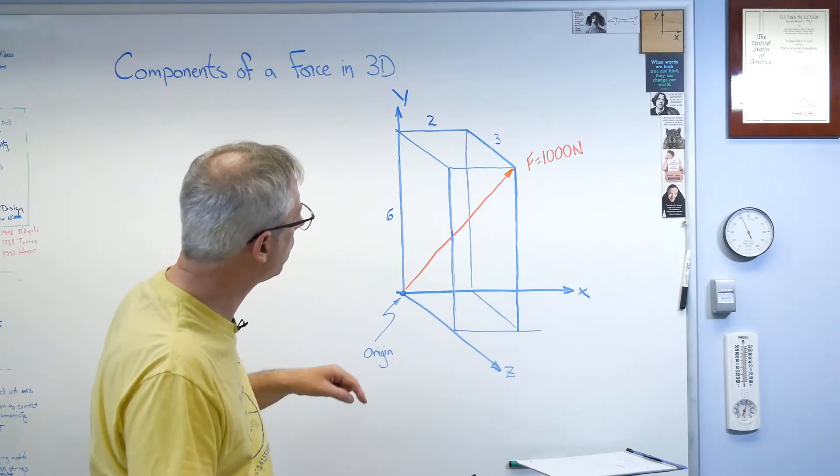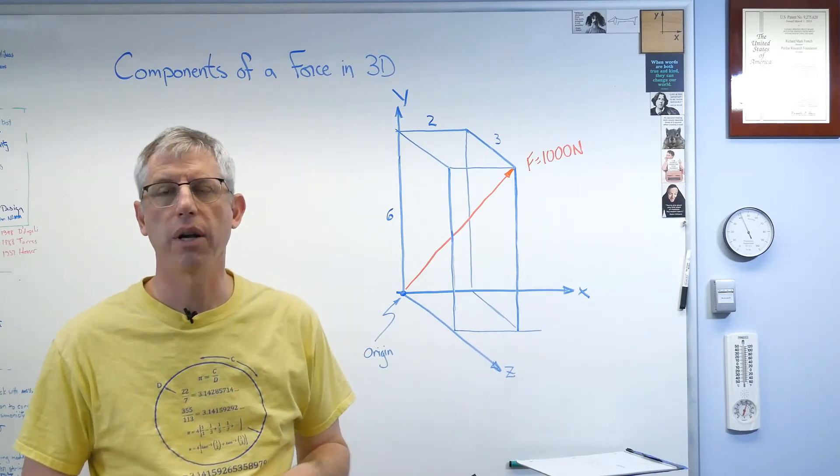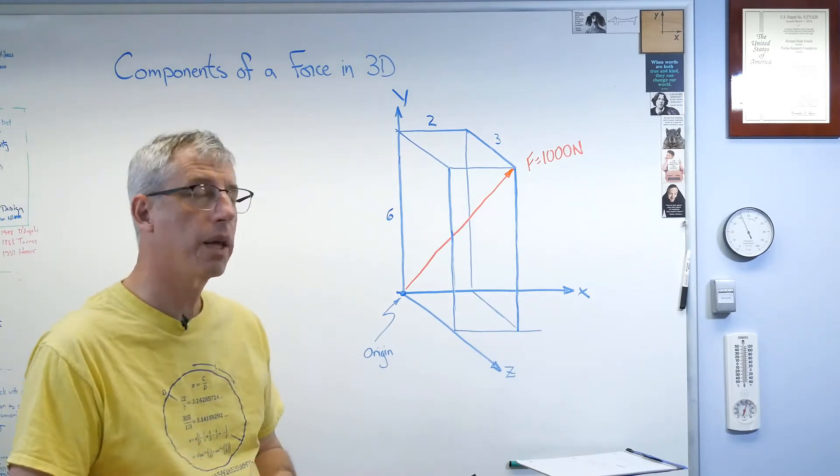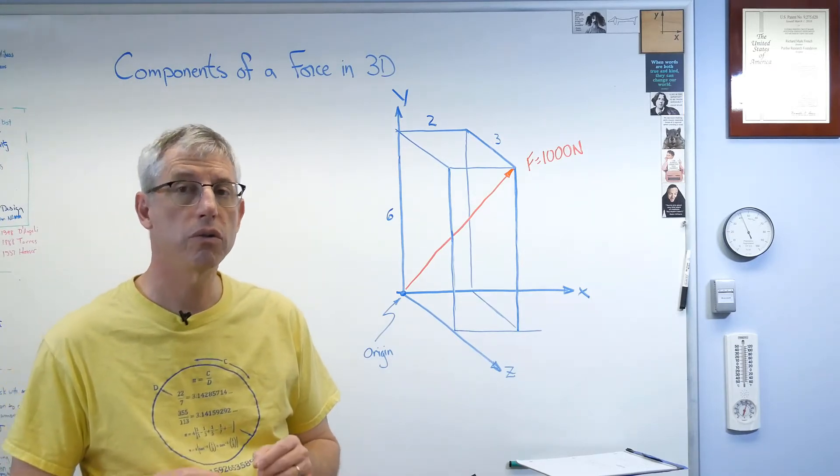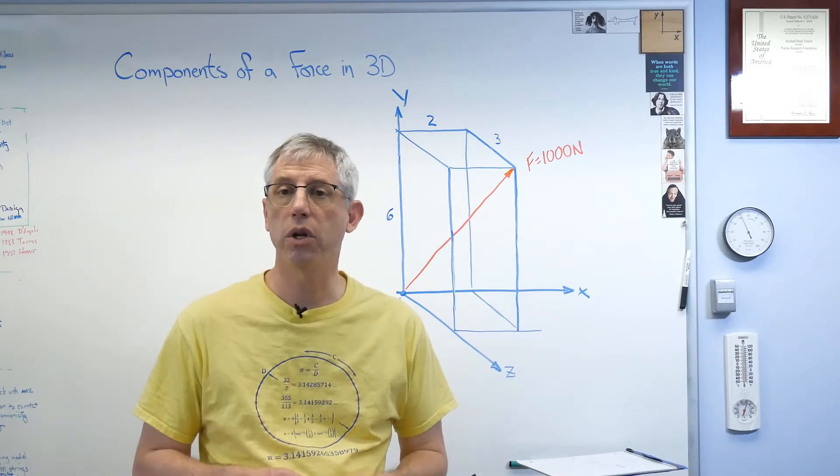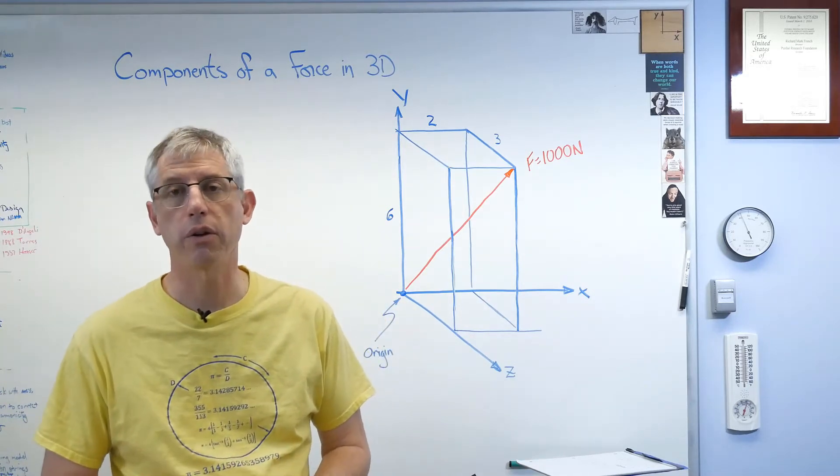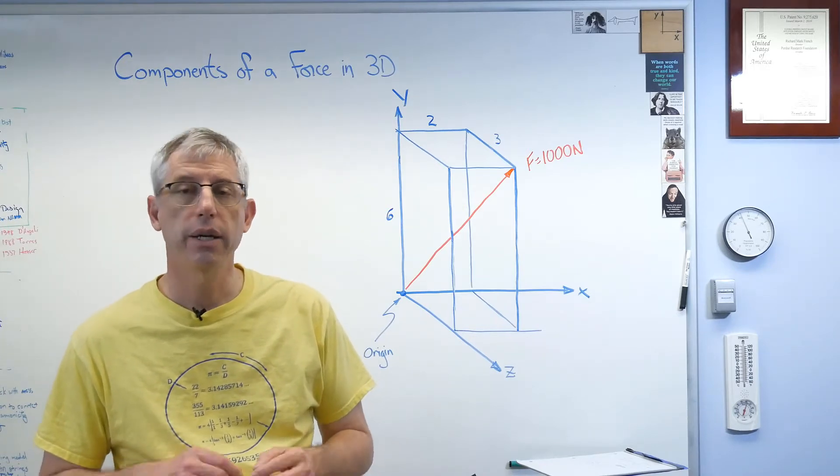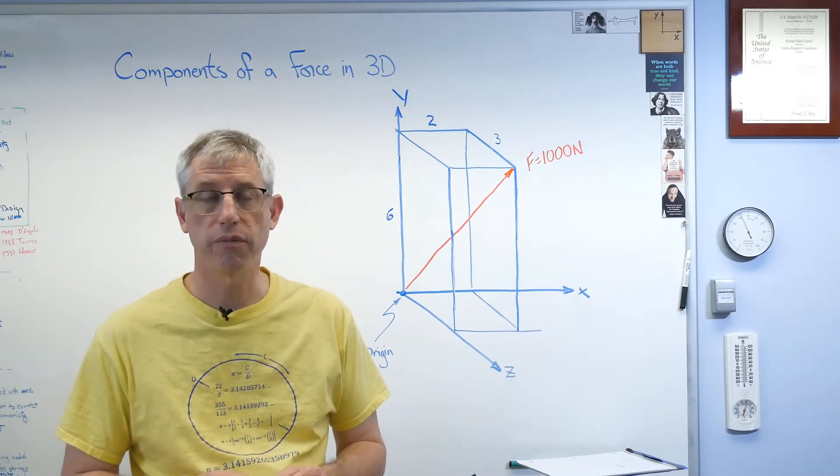If you start trying to calculate angles in here, you're going to find out pretty quick that there are so many angles, you're going to start getting confused. So we're going to do this two ways. One is we're going to use what are called unit vectors, and the other one is we're going to use cosine angles. So let's start with unit vectors first.